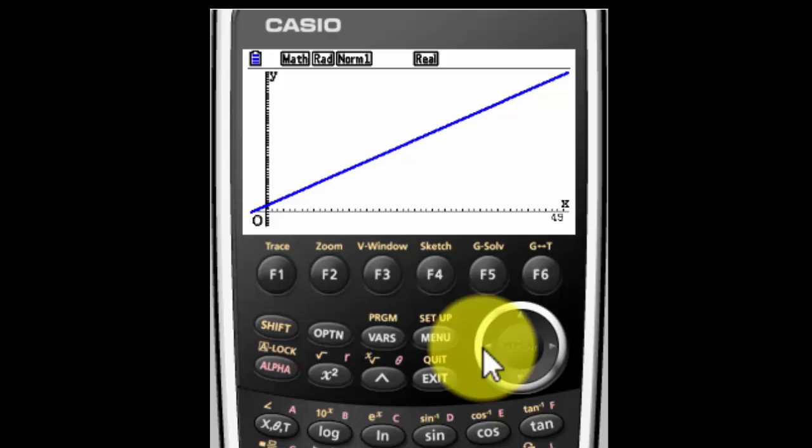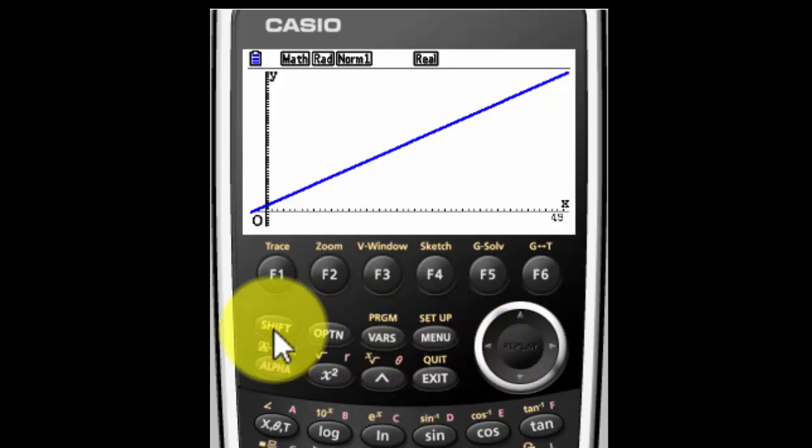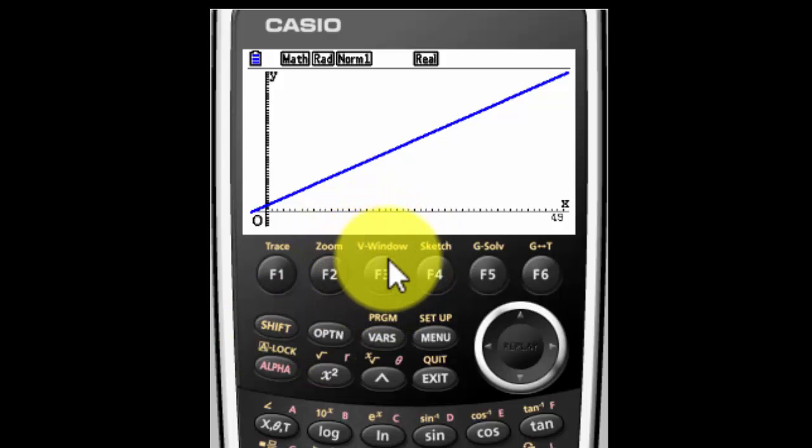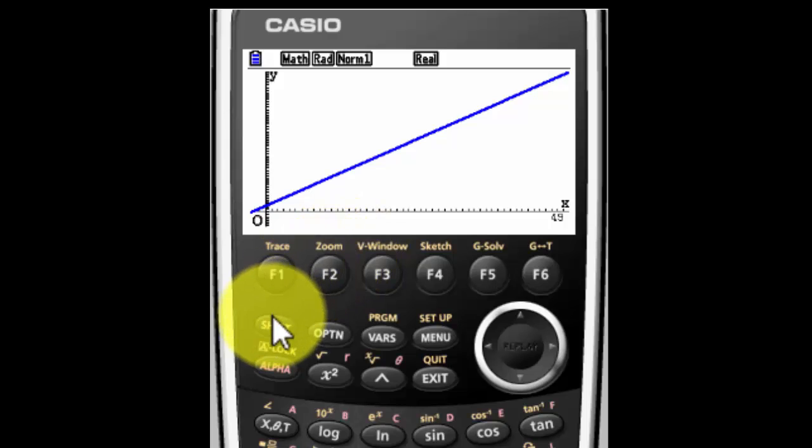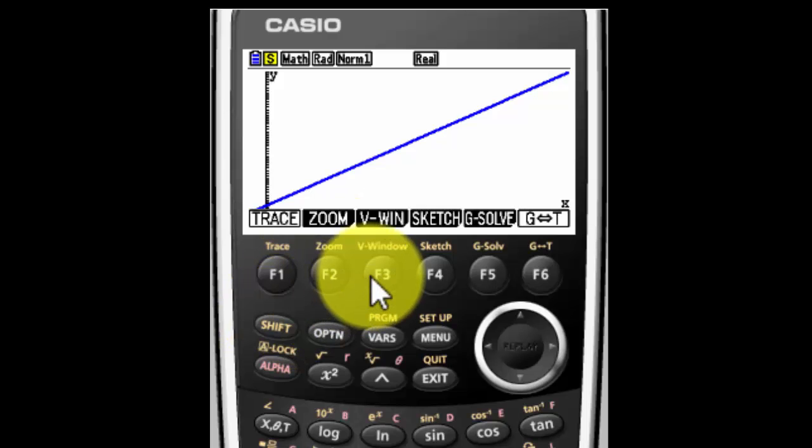So I'm going to change my view window. I'm going to press Shift and F3. Do you see above the F3 where it says V window and it's kind of in a yellowy brown? That means I have to hit the Shift key, my view window.